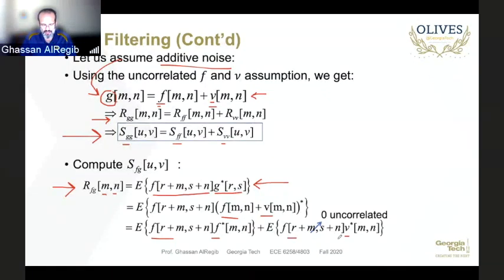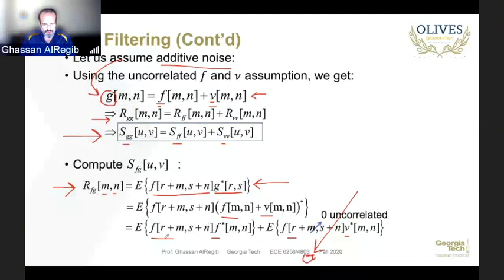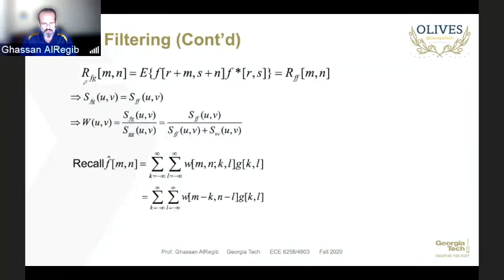Expanding: we have the expected value of f times f-conjugate, plus the expected value of f times the noise. But from our second assumption, f and the noise are uncorrelated, so the second term becomes zero. What we are left with is: the cross-correlation between f and g equals the autocorrelation of f. So S_fg equals S_ff, the power spectral density of f, for the additive noise case.